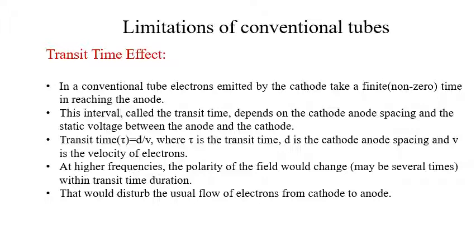In a conventional tube, electrons emitted by the cathode take a finite, non-zero time to reach the anode. This interval, called the transit time, depends on the cathode-anode spacing and the static voltage between anode and cathode. The transit time τ can be written as d/v, where d is the cathode-anode spacing and v is the velocity of electrons. At higher frequencies, the polarity of the field would change, and for even higher frequencies it may change several times within one transit time duration, disturbing the usual flow of electrons.